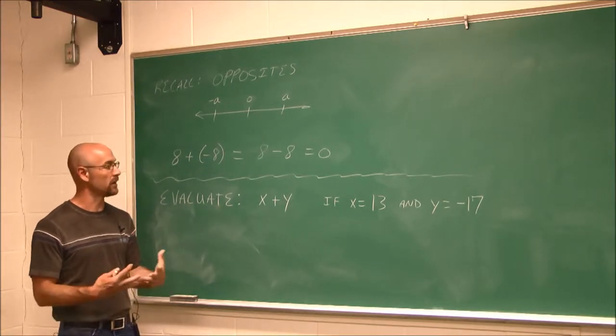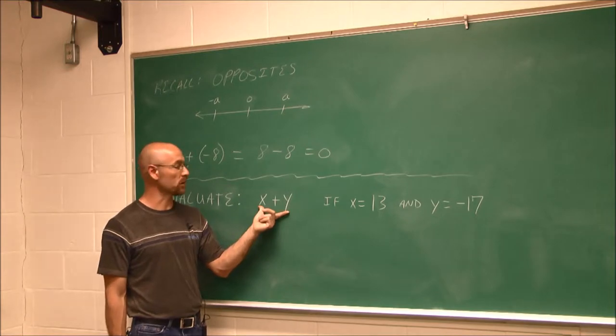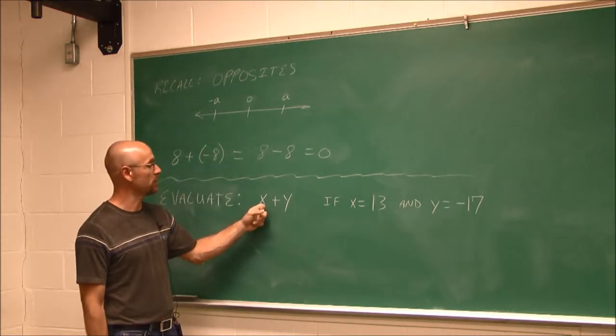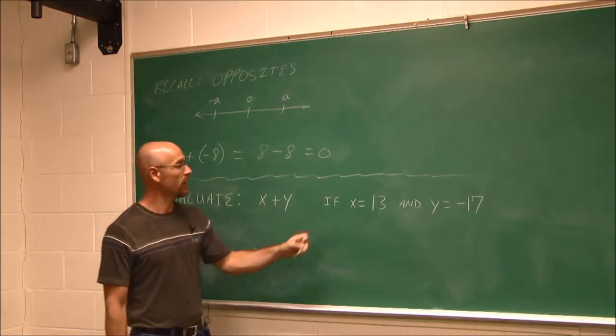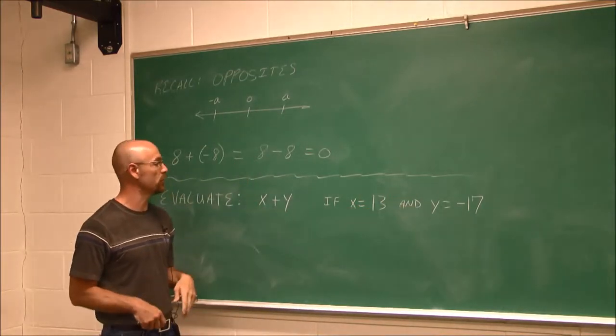If we recall, evaluate, I like to call it plugging and chugging. We just have to put in the values we're given. So I have the expression x plus y, and I'm told if x is 13 and y is negative 17, what am I going to find?